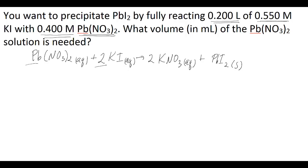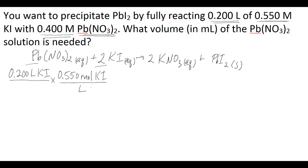In order to use the mole-mole relationship, you need to get from molarity to moles. You can do that for potassium iodide because you know both the volume and the molarity. So you have 0.200 liters of potassium iodide, and with a molarity of 0.550 moles of potassium iodide per liter, the liters cancel and you're left with moles of potassium iodide.